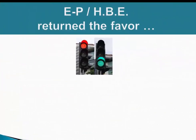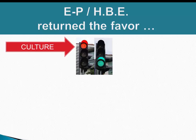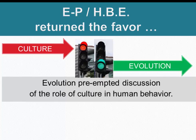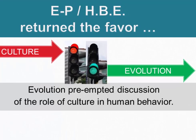As evolutionary psychology and human behavioral ecology developed, they more or less returned the favor. So now, instead of evolution hitting a red light, culture hits a red light and evolution gets a green light. In the perspectives we've been looking at so far, we've had very little to say about culture, because for many evolutionary anthropologists, culture isn't viewed as a significant influence on human behavior. Instead, the effort has been to develop evolutionary explanations which don't rely on culture. So in evolutionary anthropology for the last several decades, evolution has preempted discussion of the role of culture in human behavior.